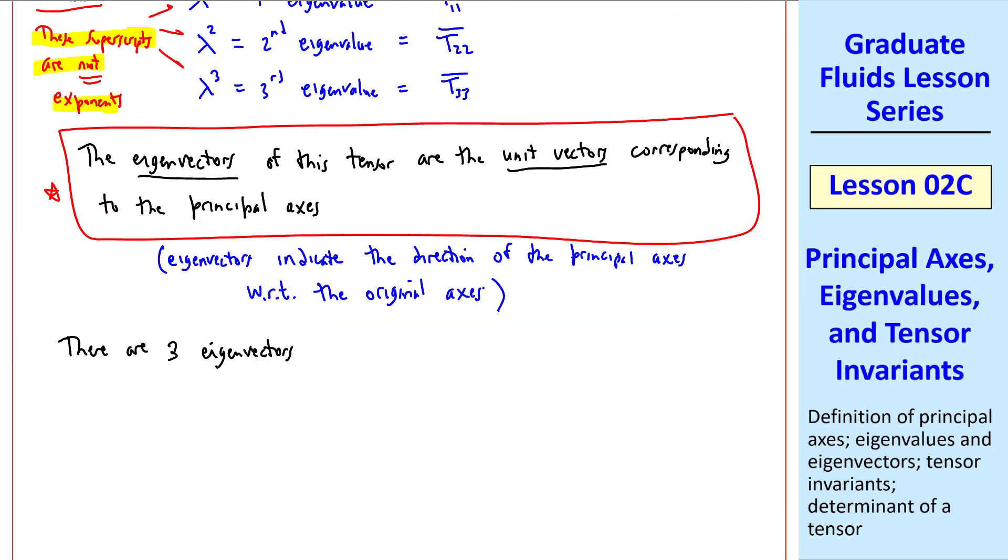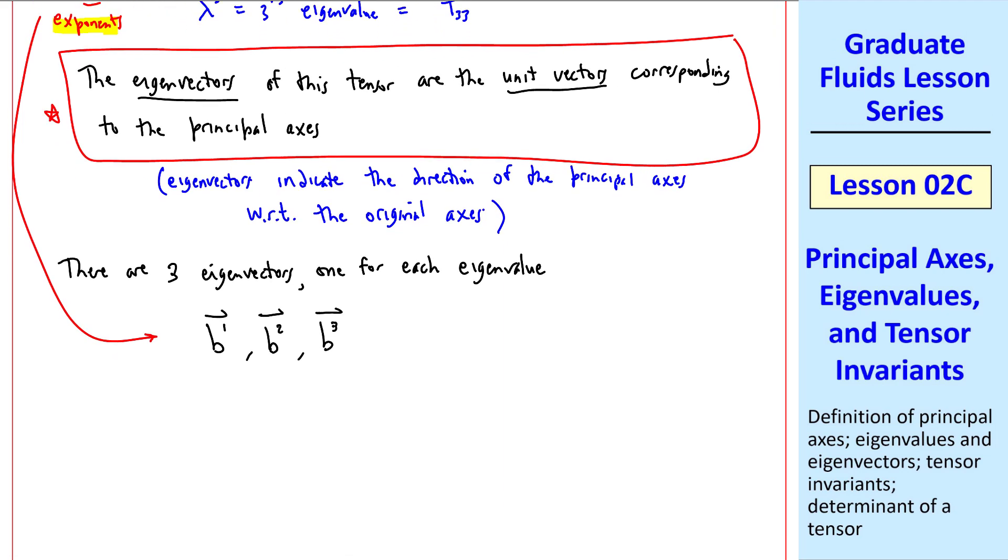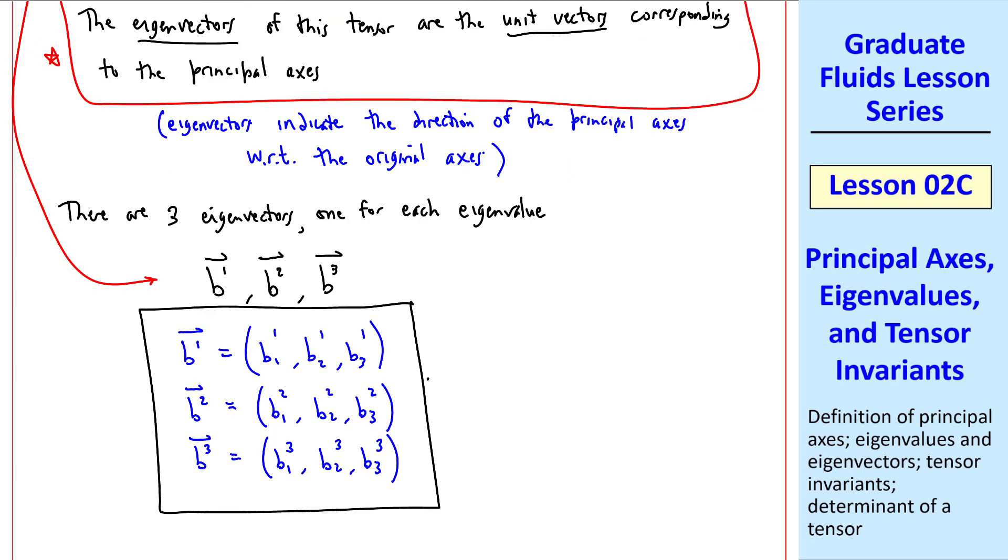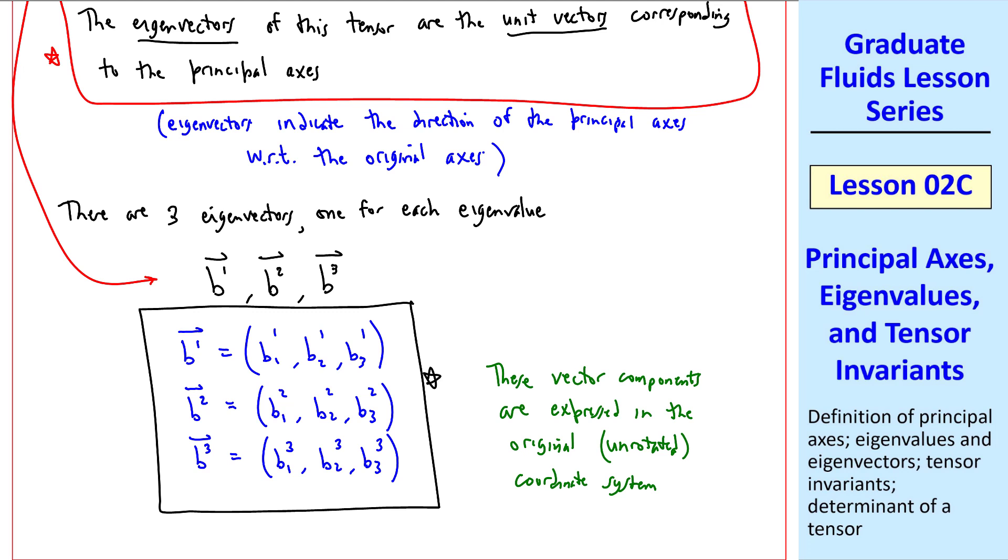In other words, the eigenvectors indicate the direction of the principal axes with respect to the original axes that we started with. In our sketch, there would be a unit vector this way, this way, and this way. Those are the eigenvectors. For these second-order tensors, there are three eigenvectors, one for each eigenvalue. We'll use the notation b1 vector, b2 vector, b3 vector. Again, these superscripts are not exponents. Why didn't we use subscripts? Well, because each of these b's is itself a vector. So b1 vector has three components, b1, b2, and b3, all with this superscript 1.